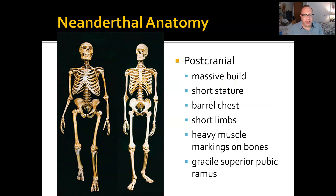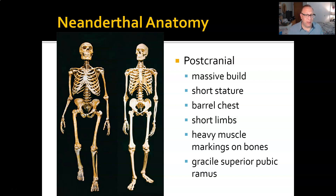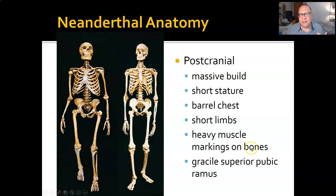Postcranial anatomy. Postcranially, Neanderthals are shorter but stockier with a massive build, following both Allen's rule and Bergman's rule—short limb-to-body ratios and low volume-to-surface area ratios. They have a barrel chest: the Neanderthal ribcage is almost conical, whereas ours is more box-like. They have heavy muscle markings on the bones; we speculate some individuals could have bench-pressed around 500 pounds. They were extraordinarily strong. The superior pubic ramus is somewhat more gracile—not as robustly built.